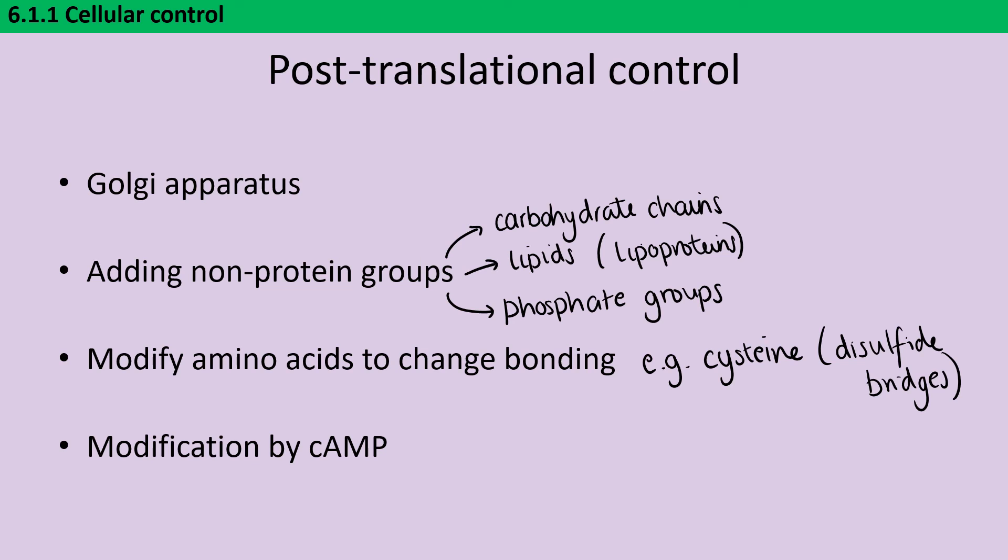And then finally, again, we can use the cyclic AMP in order to modify proteins, as we've seen in the lac operon, where the cAMP joins together with CRP to produce a complex. And when that complex binds, it goes on to increase transcription.